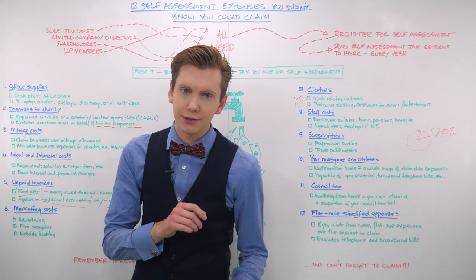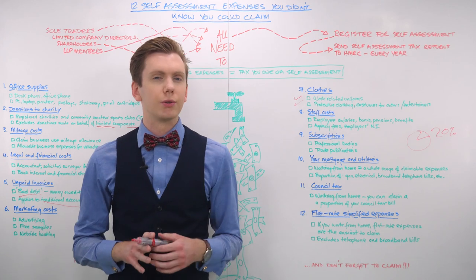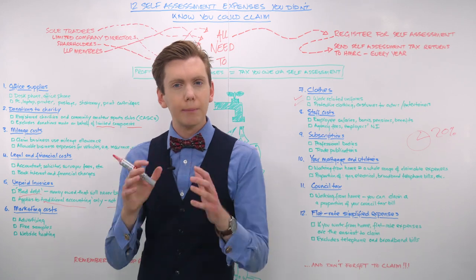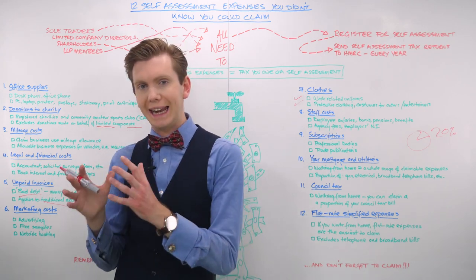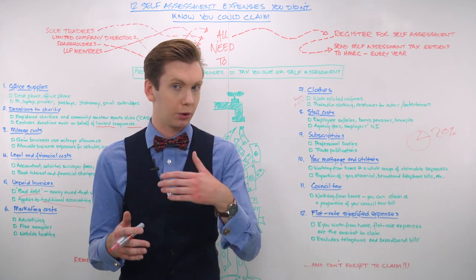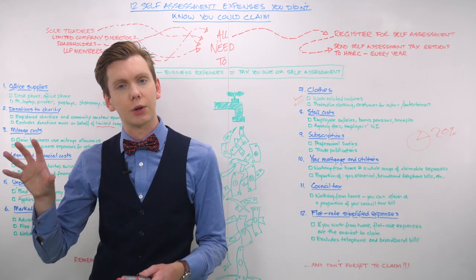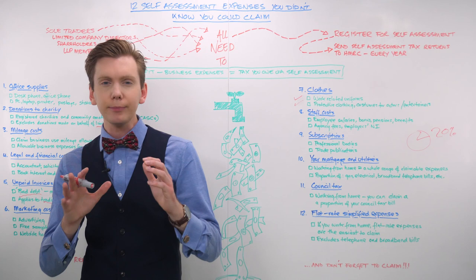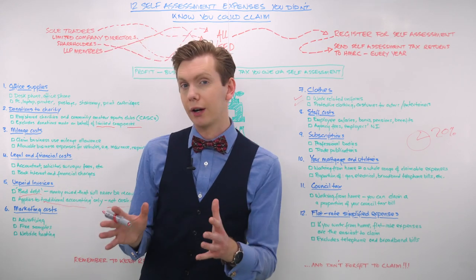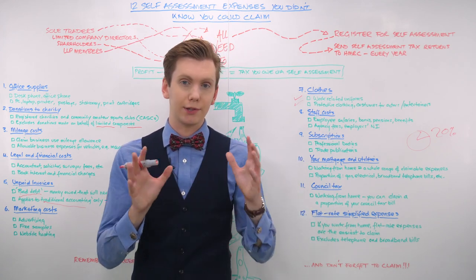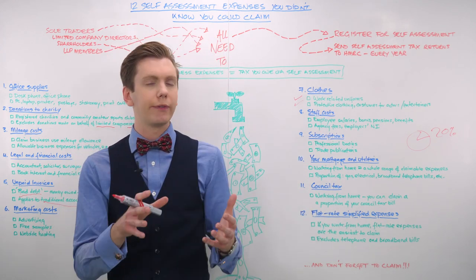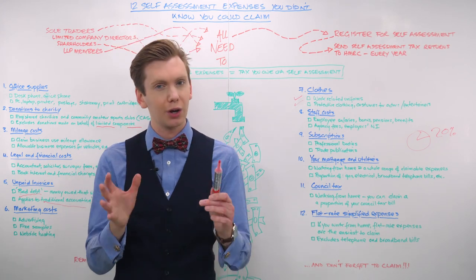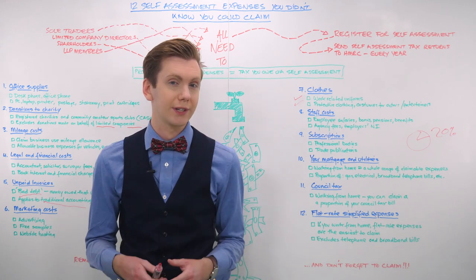Number 11 here is council tax. A lot of self-assessment users tend to forget about council tax when calculating their business expenses. But in the same way that you are permitted to count a portion of your mortgage interest or rent or utility bills against the cost of your tax bill, you can also factor in part of your council tax bill. The same rule applies regarding how to calculate the amount you're allowed to chalk up as an expense. If your home office accounts again for 20% of the space in your property, then you're allowed to claim 20% of the cost of your council tax on your self-assessment tax bill.